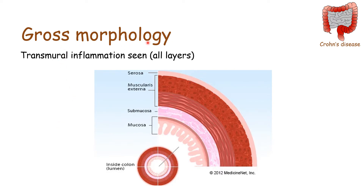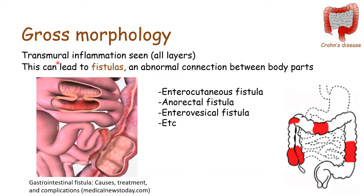In terms of gross morphology, we will have transmural inflammation, meaning all the layers of the colon will be affected by Crohn's disease. Transmural inflammation can lead to fistulas — an abnormal connection between body parts. Because the inflammation can spread through the wall of the intestine into another part, it creates an abnormal connection between two loops of small bowel, or between the small bowel and the large colon.